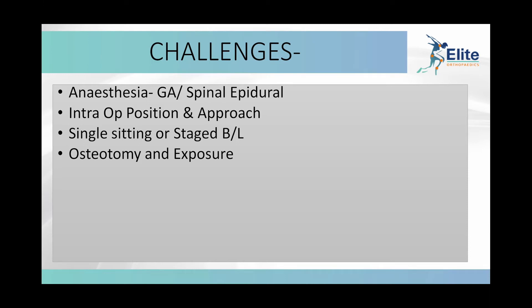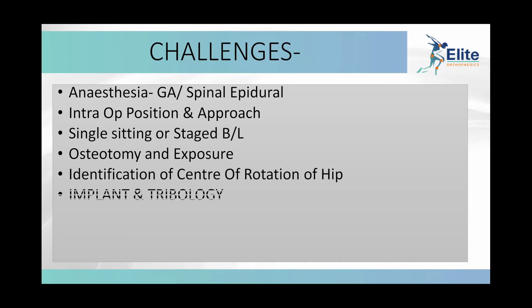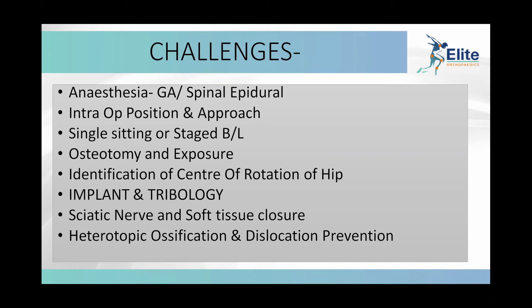The challenges include where to position the osteotomy, how to expose the hips, identifying the true center of rotation, selecting the right implant and tribology for this young active patient with high dislocation risk, protecting the sciatic nerve with flexion contractures, and managing soft tissue closure. For heterotopic ossification prevention, we use indomethacin 25mg TDS for four weeks.